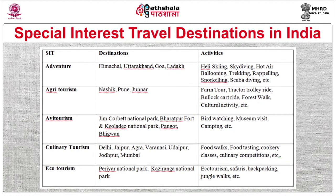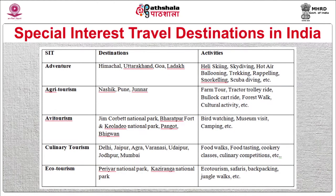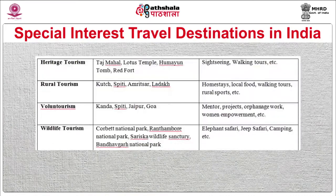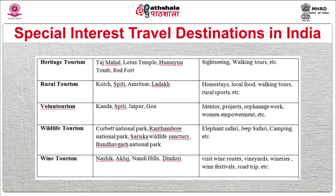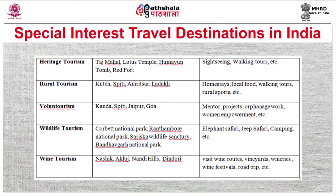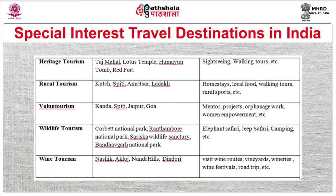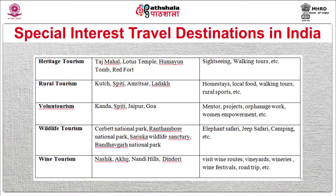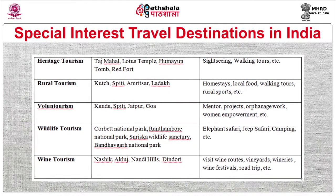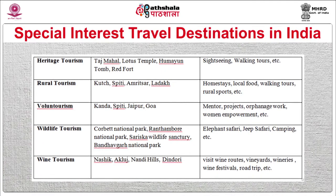Culinary activities in India include food walks, food tasting, cookery classes, and culinary competitions. For ecotourism, Periyar National Park, Kaziranga National Park, and many other places offer backpacking, safaris, and jungle walks. For heritage tourism, the Taj Mahal, Lotus Temple, Humayun's Tomb, and Red Fort are among the famous sites. For rural tourism, Rann of Kutch, Spiti, Amritsar, Ladakh, and many rural areas offer homestays, local food, walking tours, and rural sports.